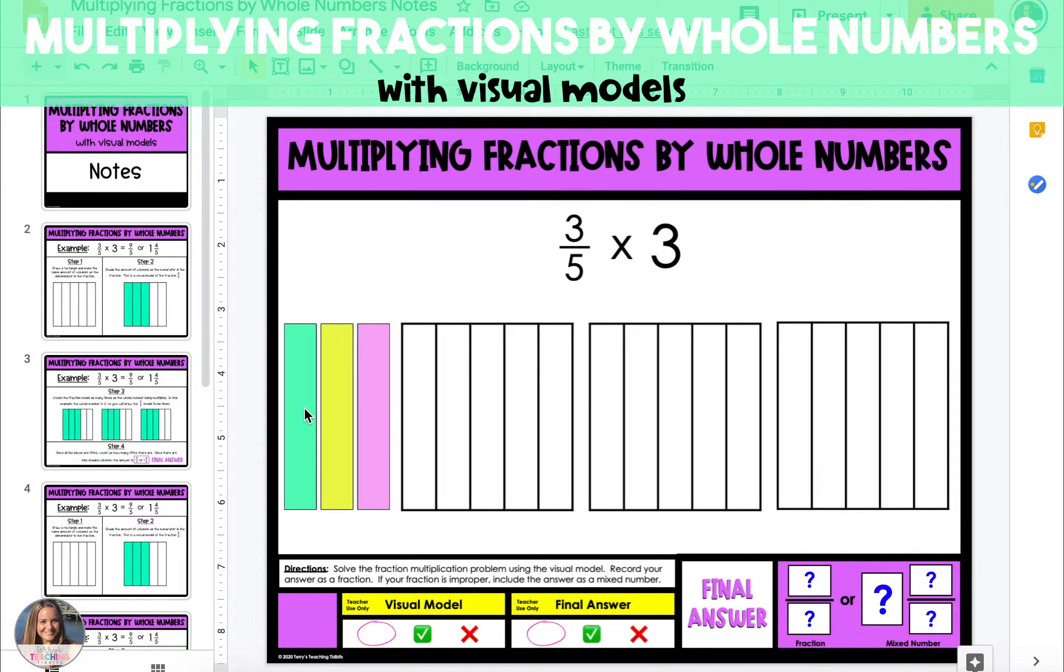In the second strategy, we're going to begin by filling in 3 fifths of the first model. To do this, you're going to drag one of the colored bars from the left side of the slide, and you can use any of the colors that you choose.